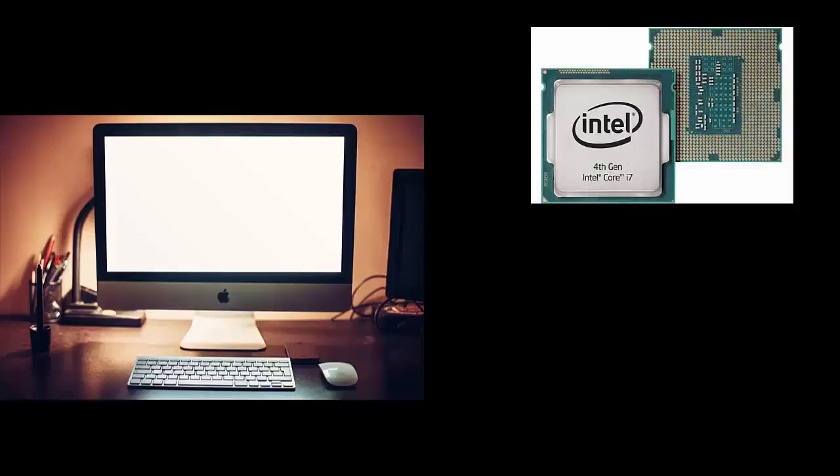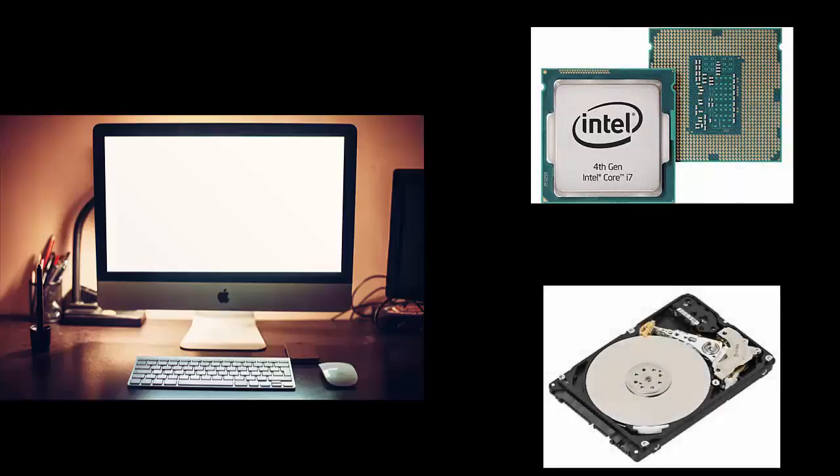A computer has two basic parts: the part that thinks, which is the central processing unit, and the part that stores memory, which is the RAM and hard drive. But the brain does not make this distinction between thinking and memory.